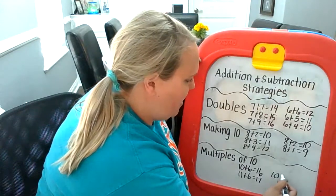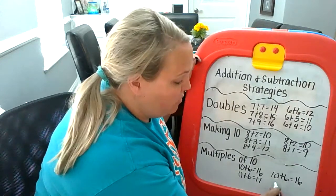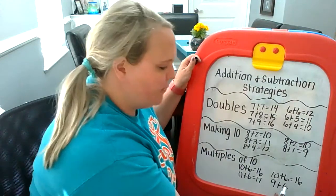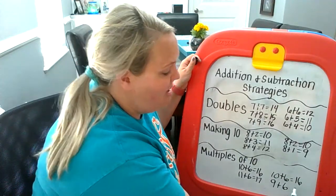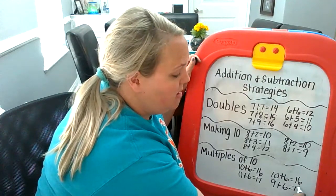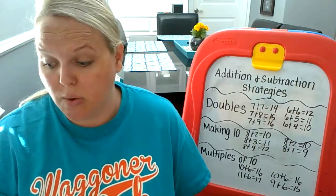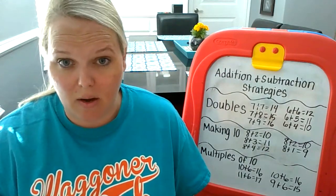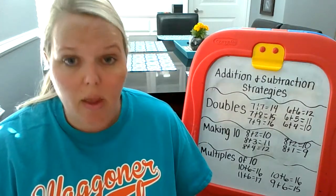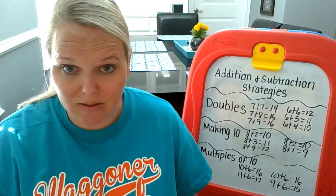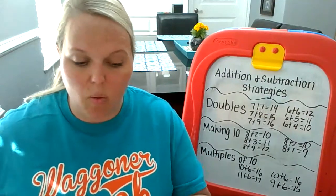It can go the opposite way too. If I have 10 plus 6, I know that it's going to be 16. Well, if someone said, what's 9 plus 6? I know 10 plus 6 is 16. 9 is one less than 10, so my answer is going to be one less than 16, which would make it 15. So your challenge for this week is to create note cards focusing on your doubles, your making 10s — the addends that would make a sum of 10 — and then your multiples of 10 with a one-digit number.